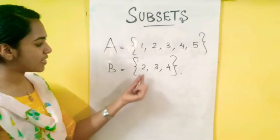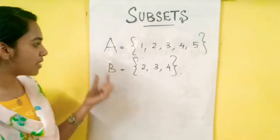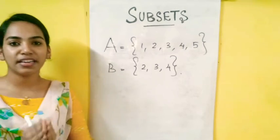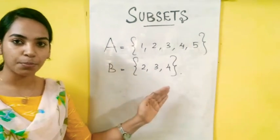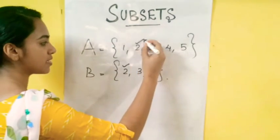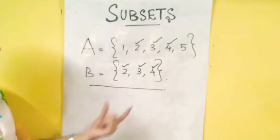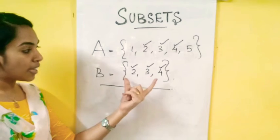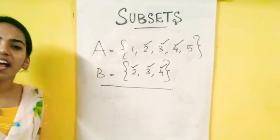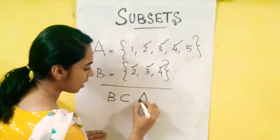You can have 3 elements or 4 elements. You need to check the condition: for any subset of B here, you check if all elements are present in A. If all elements of B are present in A, then B is a subset of A.